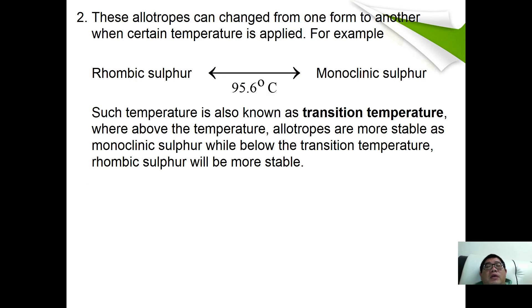These allotropes can change from one form to another under certain temperature. For example, for rhombic sulfur to become monoclinic sulfur, the transition temperature is 95.6 degrees. In other words, when everything is above the temperature, the allotrope is more stable in monoclinic sulfur, while below transition temperature, rhombic sulfur will be more stable.